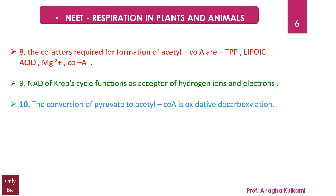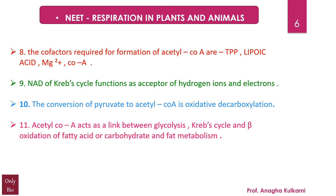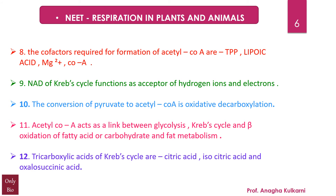Point number 10: The conversion of pyruvate to acetyl coenzyme A is oxidative decarboxylation. Point number 11: Acetyl coenzyme A acts as a link between glycolysis, the Krebs cycle, and beta-oxidation of fatty acids — that is, between carbohydrate and fat metabolism. Point number 12: The tricarboxylic acids of the Krebs cycle are citric acid, isocitric acid, and oxaloacetic acid.